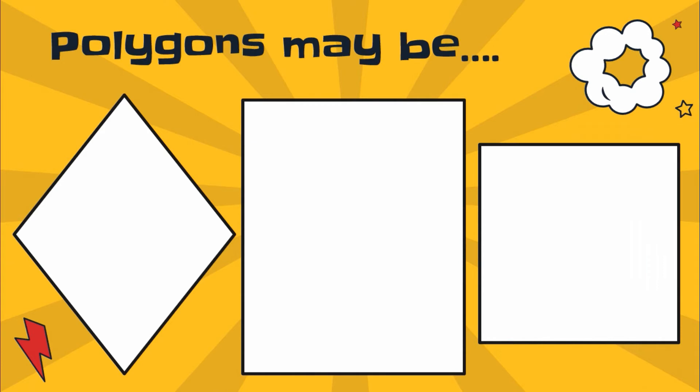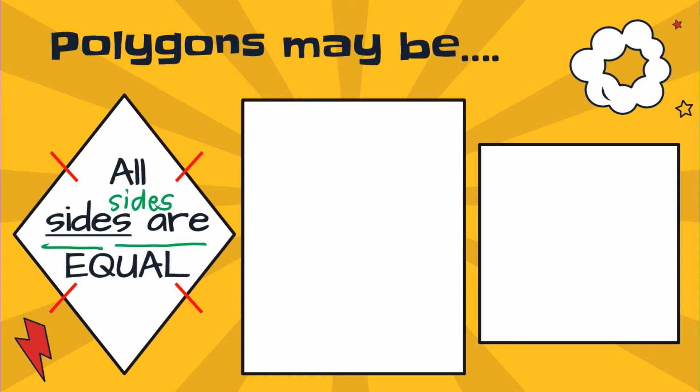Now, as you can learn, polygons may be equilateral. What does equilateral mean? From the word equi meaning equal, and lateral meaning sides. When we say lateral, sides is what it means. Based from the figure you see, we can say that that is an equilateral polygon with all sides that are equal.